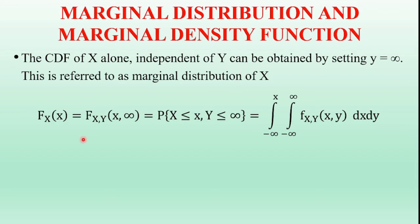This probability is equal to the double integral from minus infinity to x, and since Y equals infinity the range of Y is from minus infinity to infinity, of the joint probability density function f_XY of (x, y) dx dy. Here f_XY of (x, y) is the joint probability density function of the random variables X and Y. This is the expression of the marginal distribution function of random variable X.